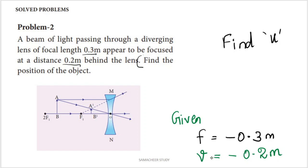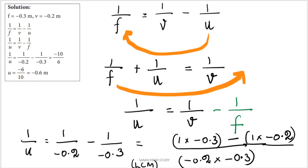Writing the given values: F is equal to minus 0.3 meters, and V is equal to minus 0.2 meters, since the image is behind the lens. Now we apply the lens formula: 1 by F equals 1 by V minus 1 by U. Rearranging, 1 by U equals 1 by V minus 1 by F. We substitute the values.